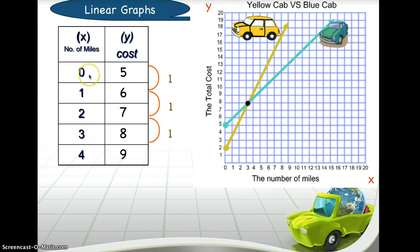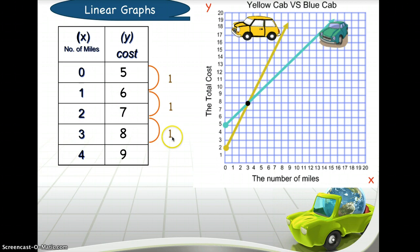For the third step, multiply the difference by the x value. Starting with x equals zero: one times zero is zero. Then find an operator so that you get the y value of five — you need plus five. So we're saying one x plus five. Check: one times one is one, plus five gives six. One times two is two, plus five gives seven. We're on the right track after checking three values.